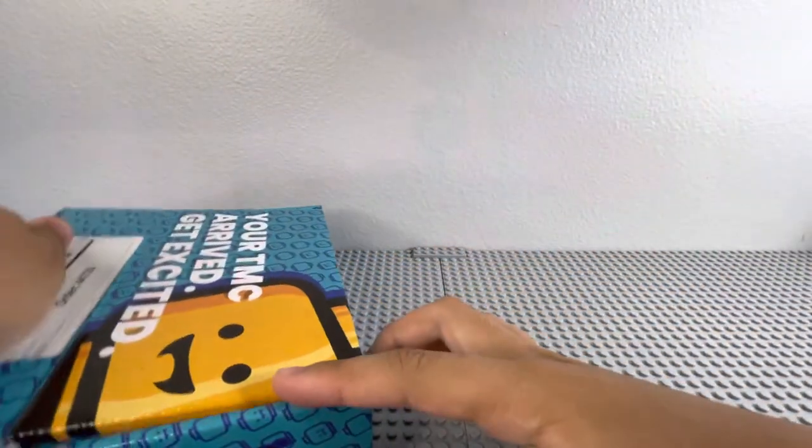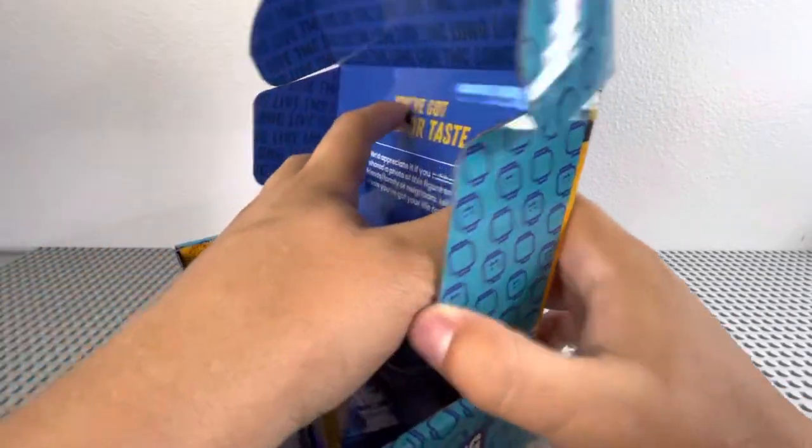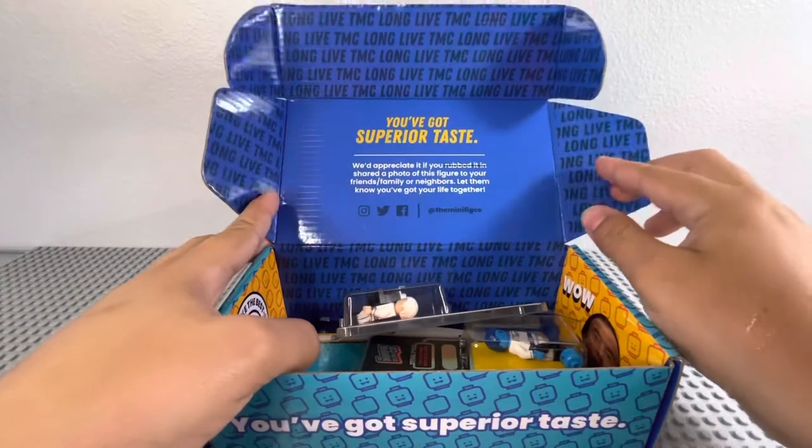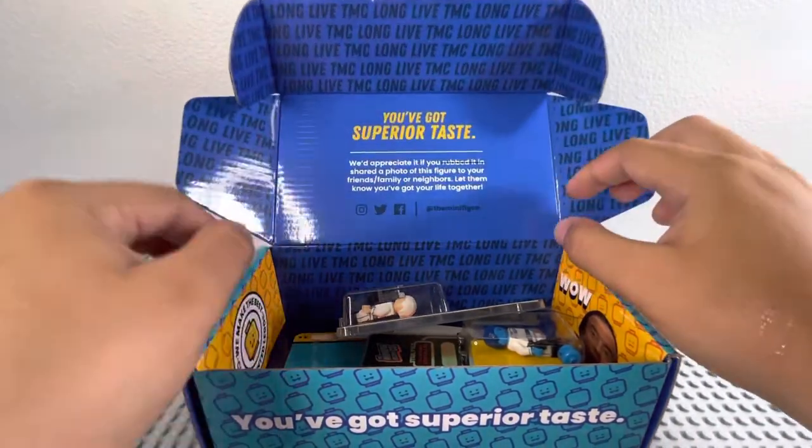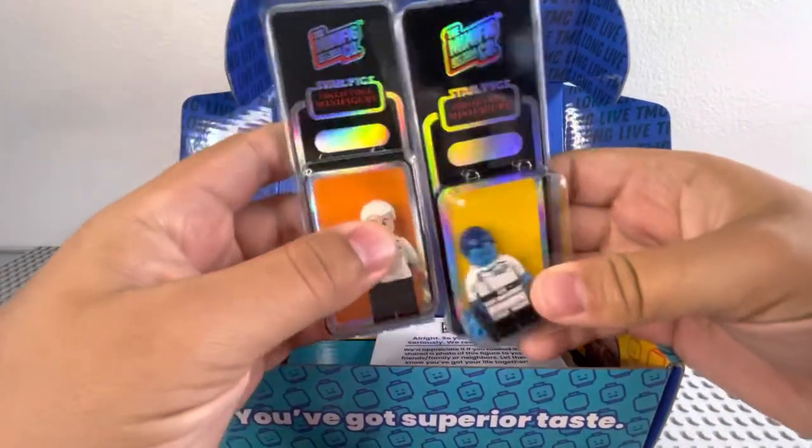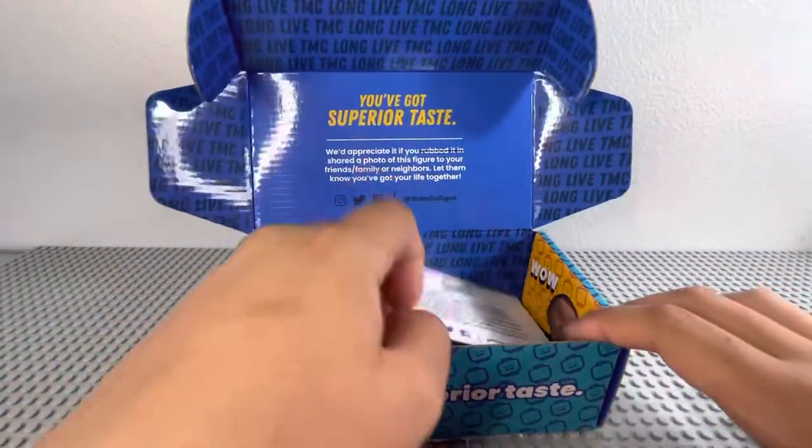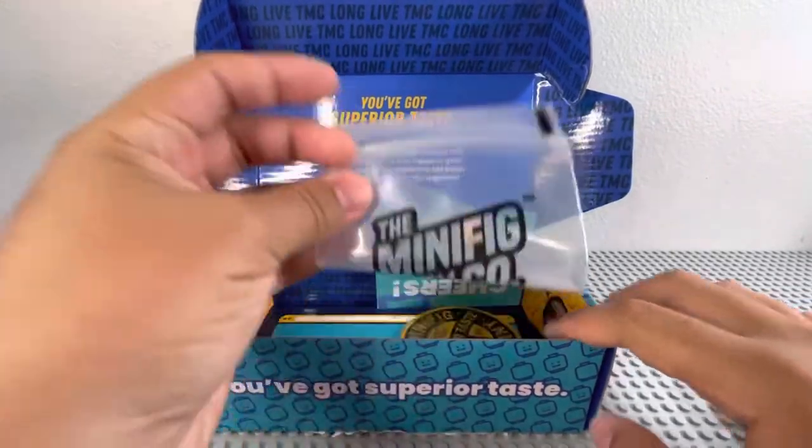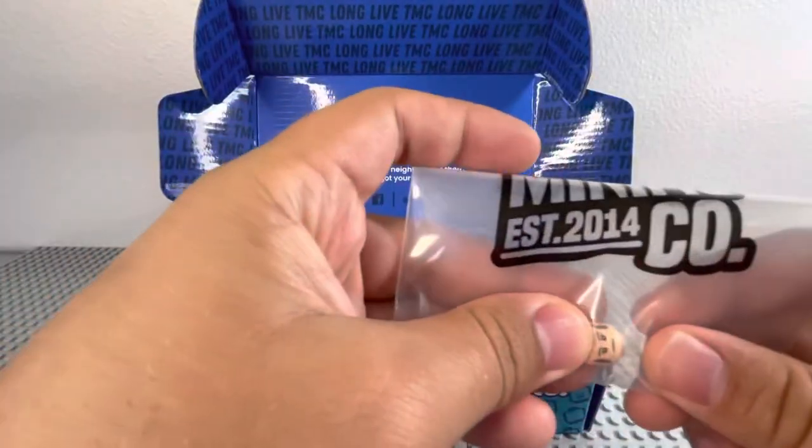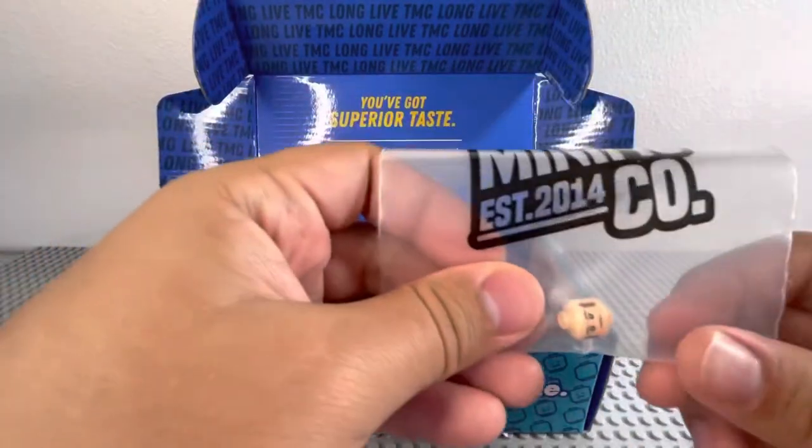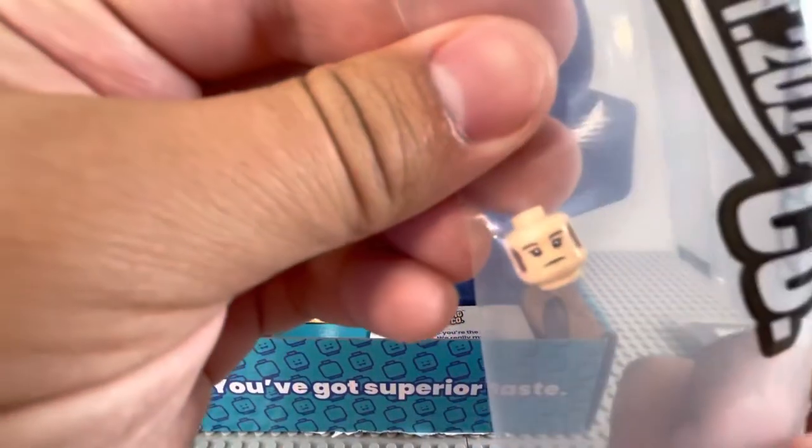You got the premium packaging with a lot of detail over every side, and here are the minifigures. They also have an Admiral Praj head, and they somehow put it in this giant bag. But here's a good look at that.